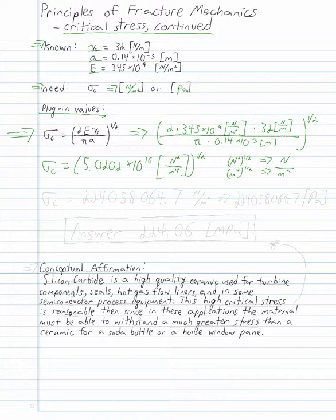Plugging into the calculator, we get our critical stress is equal to 224058064.7 newtons per meter squared. And like I said earlier, we want to convert that back to Pascal since it's a little more usable. It's the one-to-one ratio, so it's going to be the exact same number, but now it's in Pascals. Finally, we can write our answer.